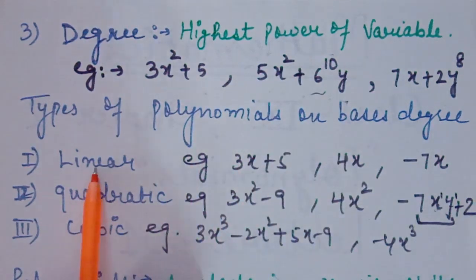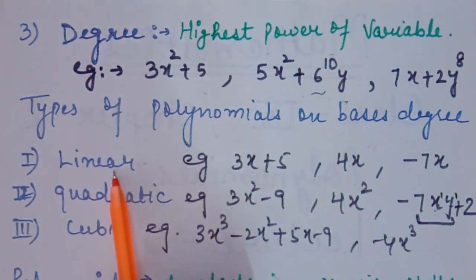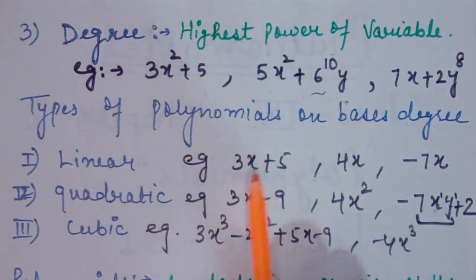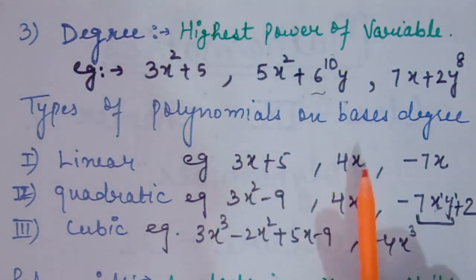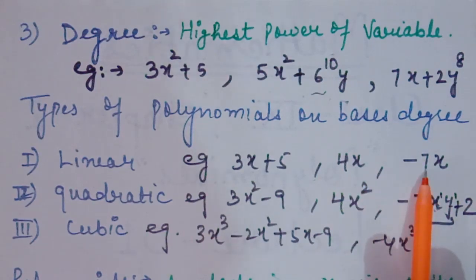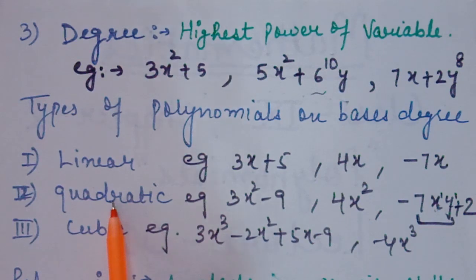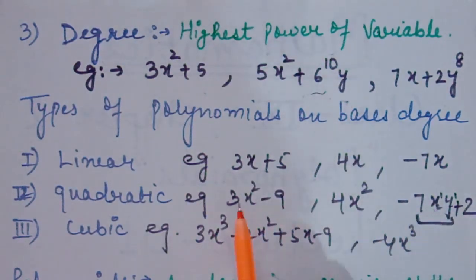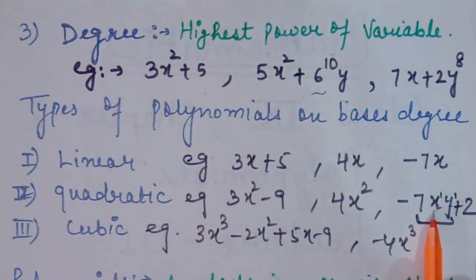Now the types of polynomials on the basis of degree. The first type is linear polynomial — linear polynomials are those in which the degree is 1. Examples: 3x plus 5, 4x minus 7, or simply x. In all these, the highest power of x is 1. Quadratic polynomials are those in which the degree is 2, like 3x squared minus 9 or 4x squared minus 7xy plus 2.